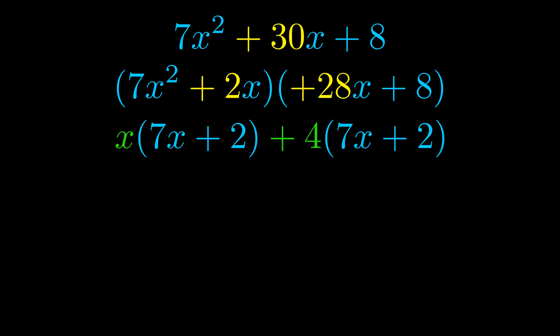Notice also how what remains inside of the parentheses is the same in both cases. The blue values are the same. Those blue values will become one of our factors and we will combine the two green values, the GCFs that we pulled out, to get the other one. And that is our fully factored equation.